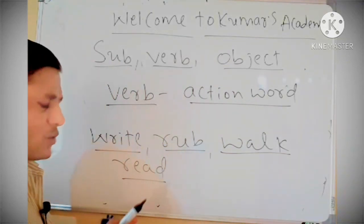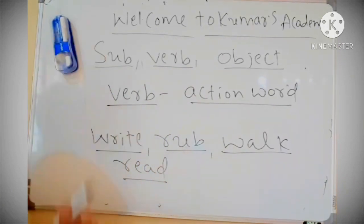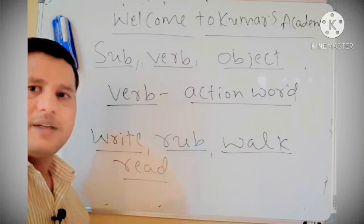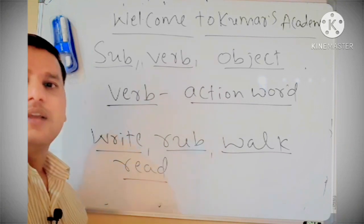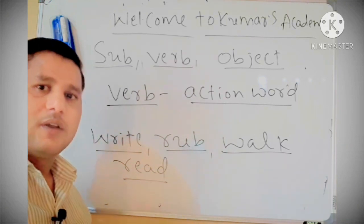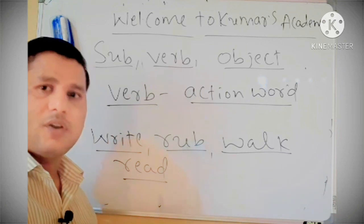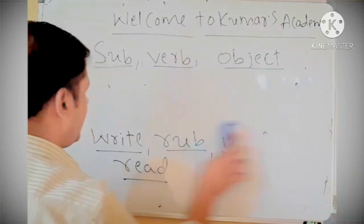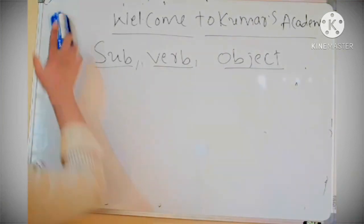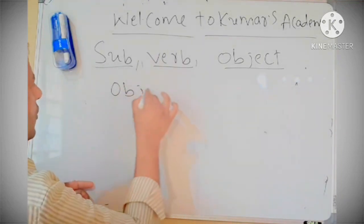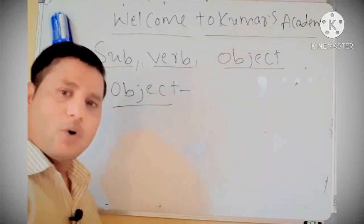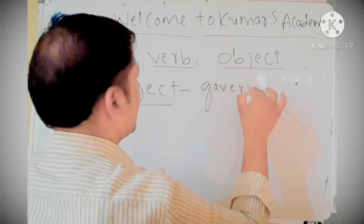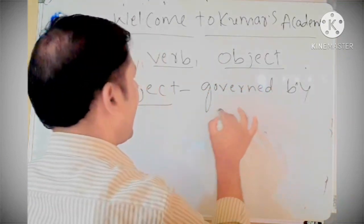If you want to know the verbs, there are many verb charts available. If you go and search, you can find them. You have to read the verbs because they are very helpful to learn English. Having more vocabulary, especially on verbs, you can learn English very easily. Next one, we can go for object.